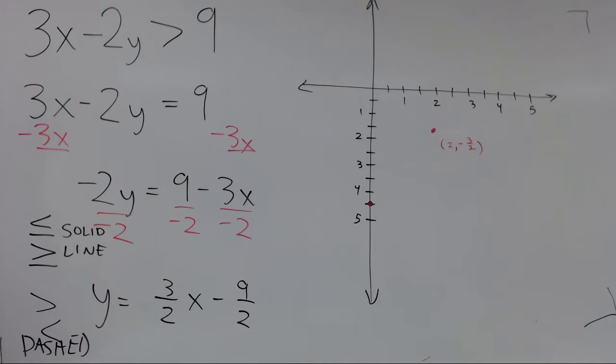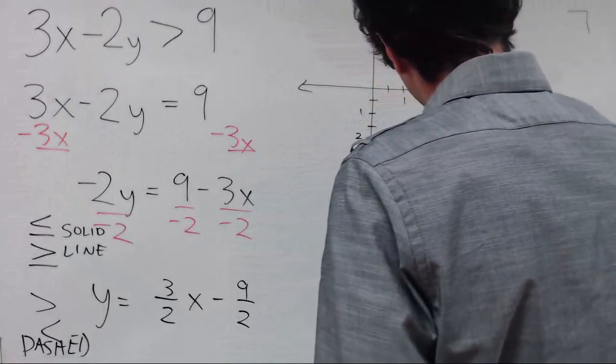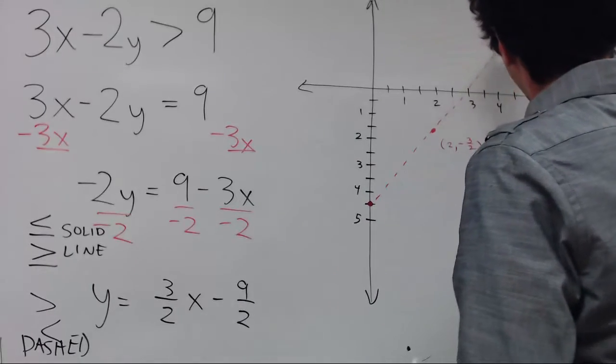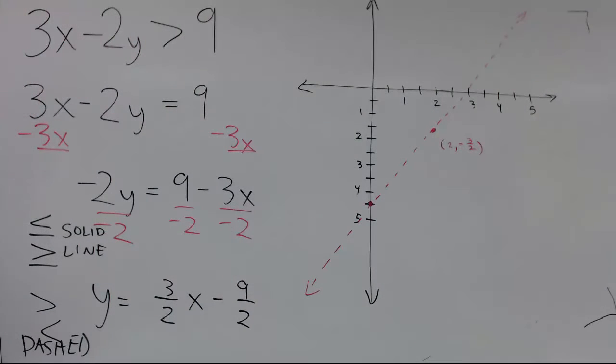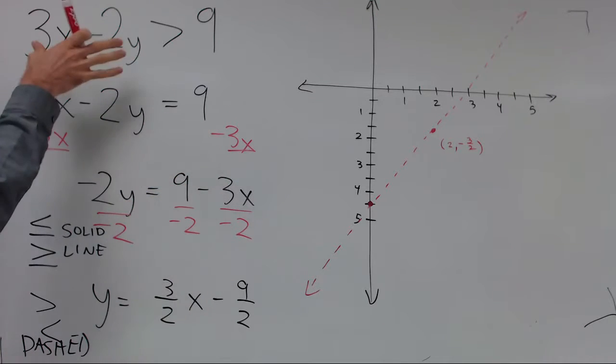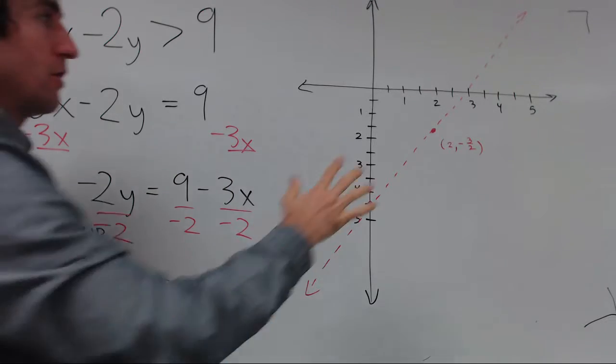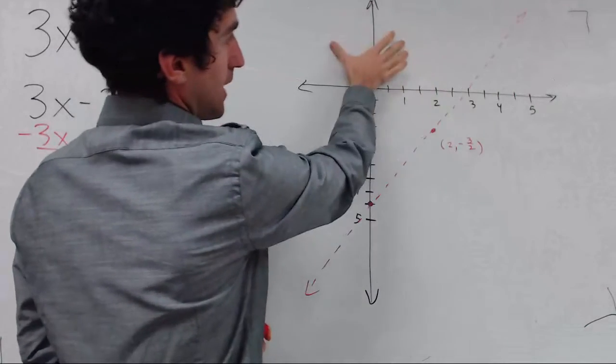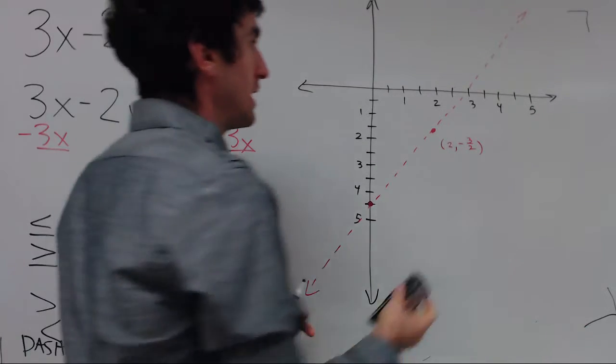We want to draw a straight line connecting these points but we're using a dashed line. So points on this line aren't actually solutions because points on this line are where 3x minus 2y equals 9. We want to know where 3x minus 2y is greater than 9. So that's going to be either down and to the right or up and to the left. Sometimes you can figure it out by looking at the inequality but I like to use a test point.